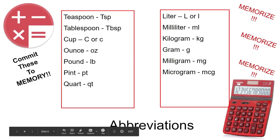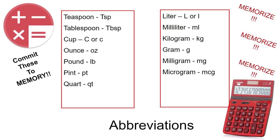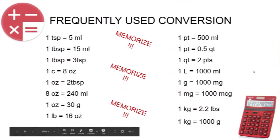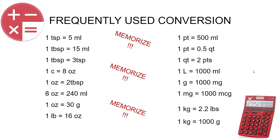Abbreviations — super important for you to memorize. You must memorize these, so please write them down and run this video back to catch all of them. These are the most important ones you will be asked about on a medication calculation test and will use in real life. And conversions — these are the most frequently used conversions, and just like with the abbreviations, you must memorize these basic conversions.